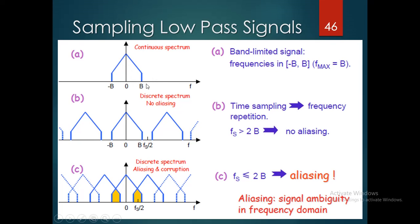Observing with bandwidths: the band-limited signal has frequency range −B to B, with Fmax = B. This is a continuous spectrum, and time sampling is converted to frequency repetition. When Fs > 2B, no aliasing occurs — this is sampling or over-sampling. When Fs ≤ 2B, this is the aliasing effect. Aliasing is an ambiguity in the frequency domain. This aliasing and anti-aliasing filter concept is a very important stage in digital signal processing. Thank you. We will continue the analog to digital conversion in the next session.